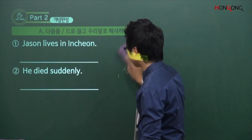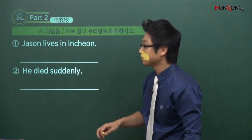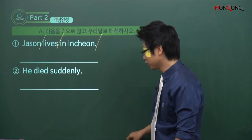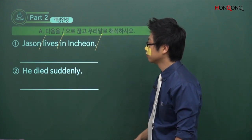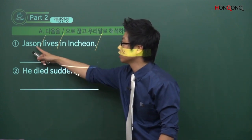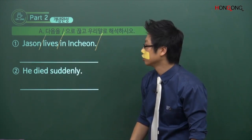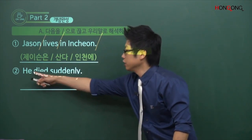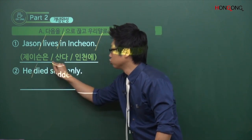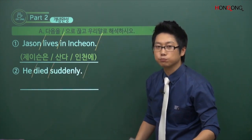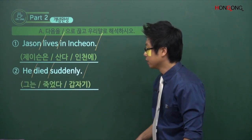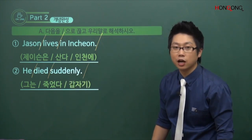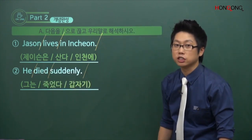이제 끊고 직접 해석해보는 겁니다. Jason은 산다 어디에? 인천에, 이렇게 되는 거죠. 제이슨은 산다, 인천에. 인천에 뭡니까? 장소죠. 그렇기 때문에 제이슨은 산다, 이 두 개만 간주하는 겁니다. 뼈대로 일형식이죠. He died suddenly. 그는 죽었다, 갑자기. 갑자기는 부사입니다. 그는 죽었다, 이 두 개밖에 카운트하지 않습니다.